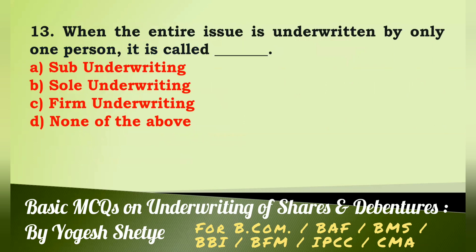Question 13: When the entire issue is underwritten by only one person it is called — (a) sub underwriting, (b) sole underwriting, (c) firm underwriting, (d) none of the above. Answer: When the entire issue is underwritten by only one person it is called sole underwriting. Answer B.